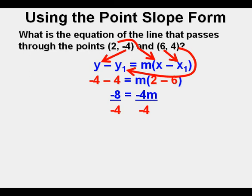And to solve for m, we divide both sides of the equation by negative 4. On the right side, negative 4 over negative 4 canceled equal 1.